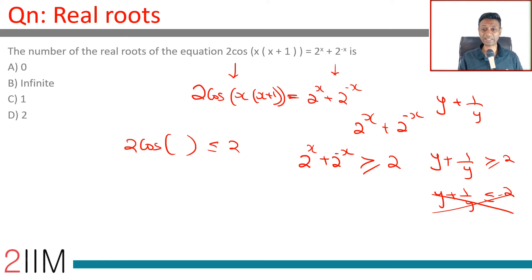So, we have got this completely nailed on. This part has to be less than or equal to 2. This part has to be greater than or equal to 2. When is it possible? When this is equal to 2 and this is equal to 2.